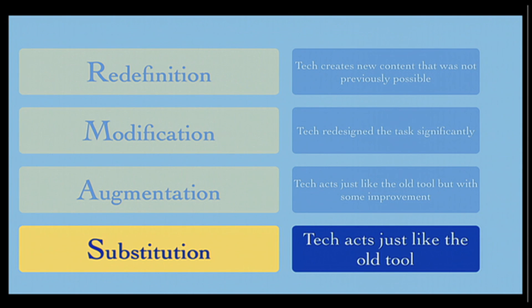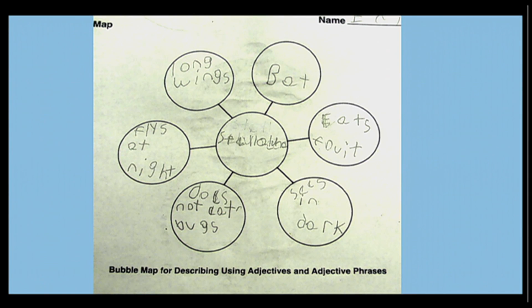So that's a really good example where technology just acts like the old tool. Technology is just doing what we would have done in the past, that substitution. So let's look at another one here.